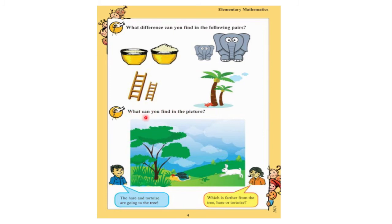Finally, the author asks: 'What can you see in this picture?' We can see a tortoise and a hare — both are making a race going to a tree. A boy says the hare and the tortoise are going to the tree. A girl asks which is further from the tree — the hare or the tortoise? You can clearly see the tortoise is very close to the tree, but the hare is very far. So the hare is further from the tree.